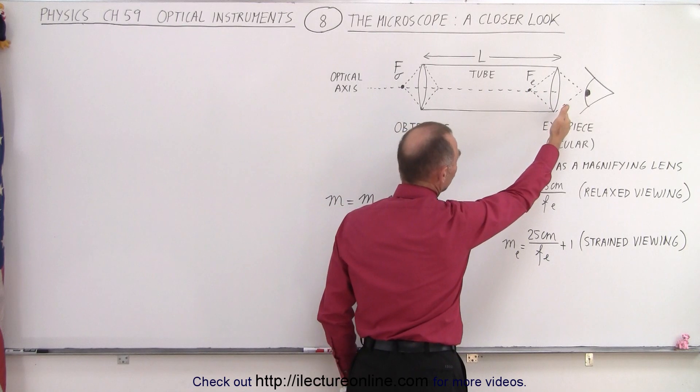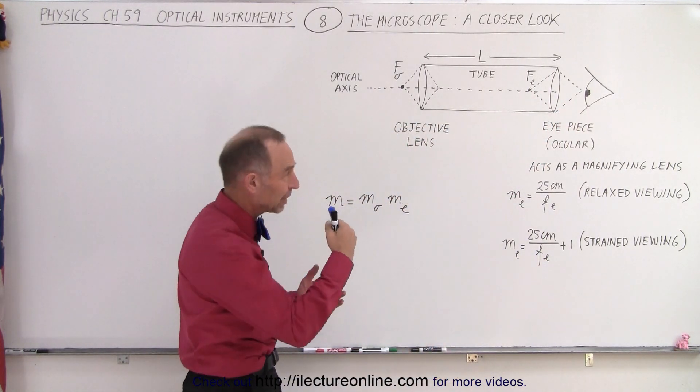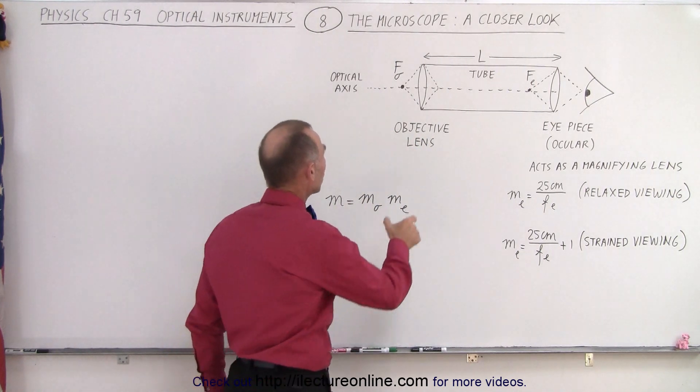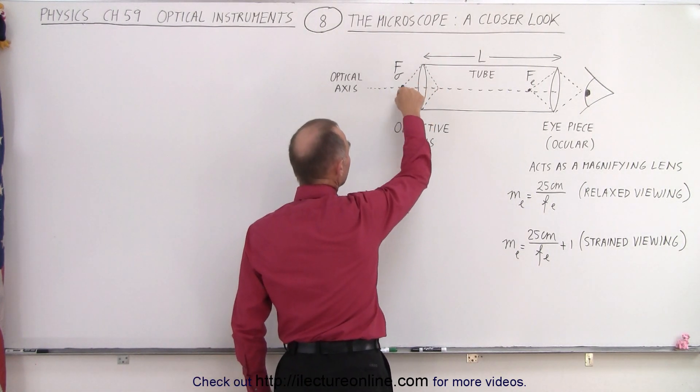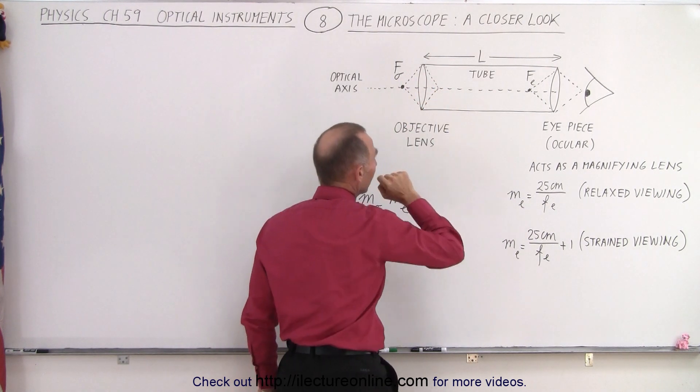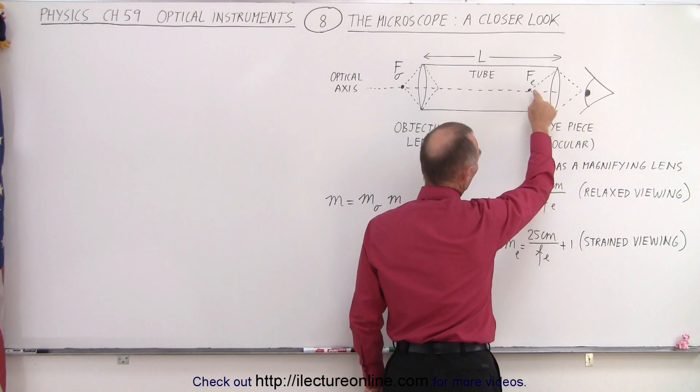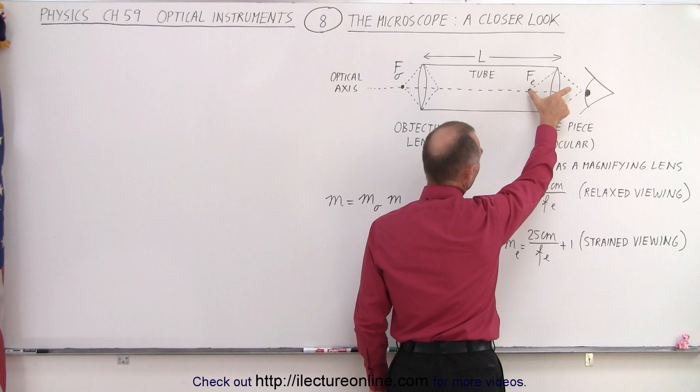And at the back of the tube we have the eyepiece, also called the ocular, and it's through the eyepiece or the ocular that we look. Notice that both the objective, or the objective lens, has a focal length and a focal point in front and back of the lens, and same over here, the eyepiece or the ocular has a focal point in front and back of the lens and a focal length.